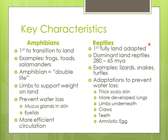Now let's look at reptiles over on the right. Reptiles are the first group that's fully land adapted. Whereas amphibians have part of their life in water and part on land, reptiles — although some are aquatic — are as a group the first that are fully land adapted. Reptiles were the dominant land vertebrates from 280 million years ago to 65 million years ago, until the dinosaurs went extinct. Current examples of reptiles are lizards, snakes, and turtles.